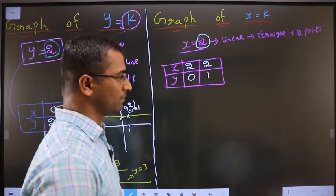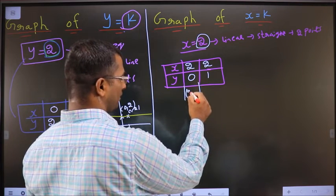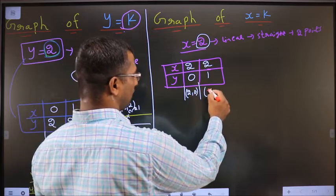What is the meaning of this? It means x value is always 2, irrespective of whatever value you take for y. So x value is always 2. Y value, let's say I have taken 0 and 1. Now my points will be 2, 0 and 2, 1.